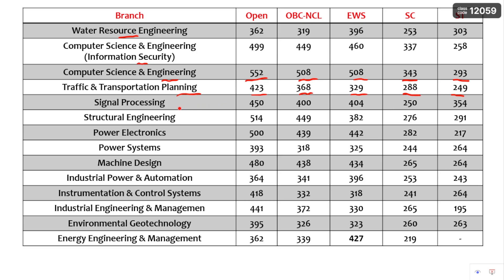Signal Processing. Structural Engineering, which is the top branch in Civil Engineering — you can see: Open cutoff 514, OBC non-creamy layer 449, EWS 382, SC 276 to 291.